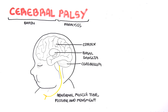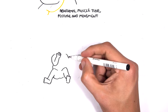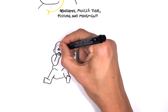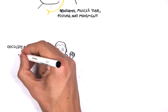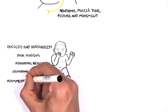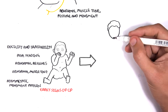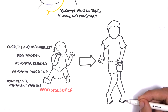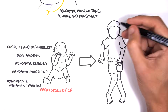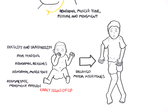Regarding the clinical presentation — cerebral palsy is a disorder that manifests shortly after birth. Early signs include docility and irritability, poor feeding, abnormal reflexes, abnormal muscle tone, and asymmetrical movement patterns. These signs can be missed and thought of as normal until the baby has grown, which is why it is important to monitor for delays in motor milestones.